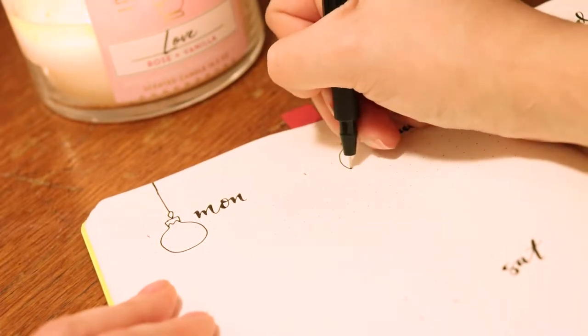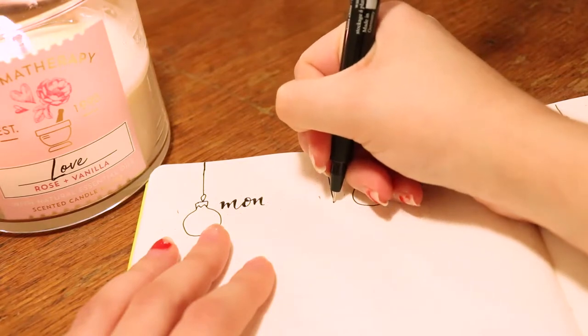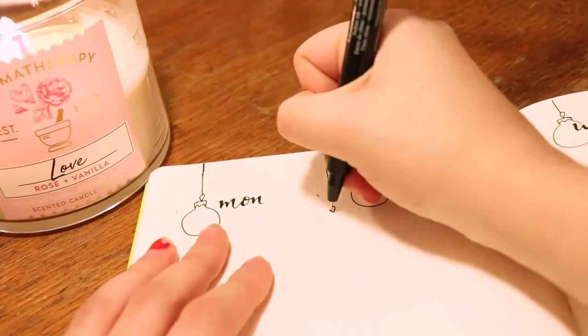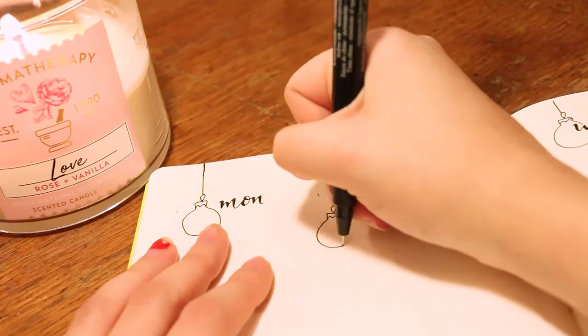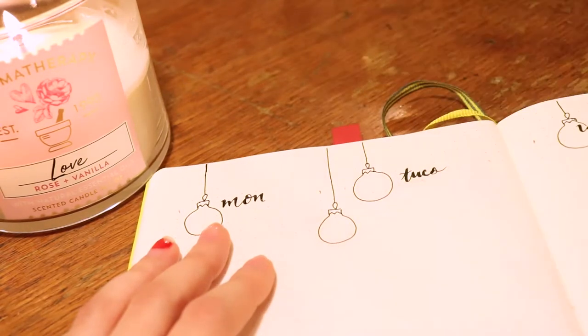Her ornaments are different shapes. I love the way that she did it, but I kind of wanted to go for just the tacky, hanging, colorful ornaments. So that's what I did. I just kind of drew them all the same, tried to make them different sizes.